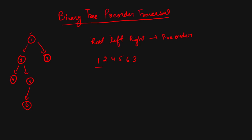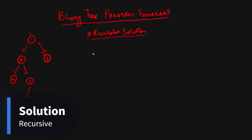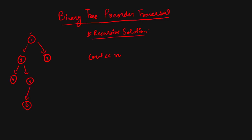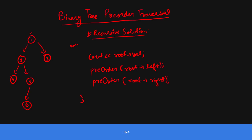This is how we traverse a binary tree in pre-order. Now let's understand how we can solve this recursively. First we print our root value, then we call our pre-order function on its left subtree. Once we've printed all of the left subtree, we go to its right subtree. If the node is null, we don't print anything — we just return.